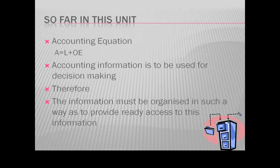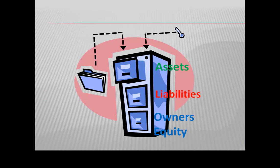Let's look at some must-know things. We've talked about the accounting equation — assets equals liabilities plus owner's equity — and we understand that accounting information is used for decision making. So we must have our information organised to provide easy access to it. We're going to use the analogy of a filing cabinet with three drawers, which signify the accounting equation: assets at the top, then liabilities, then owner's equity.